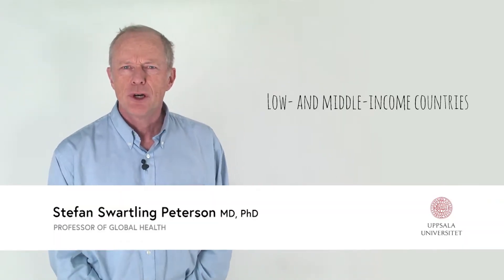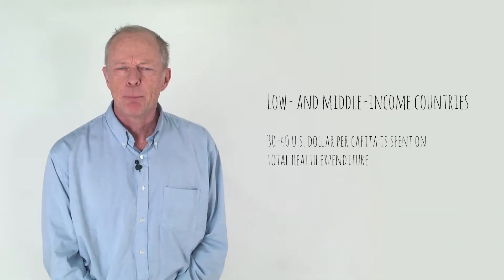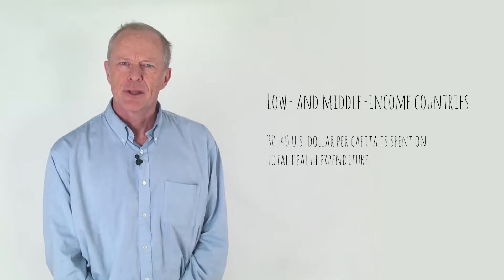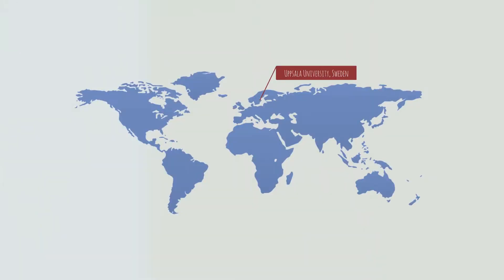Today we're going to talk about antibiotic use in low- and middle-income countries. A low-income country typically spends 30-40 dollars per capita a year on health expenditure, which means considerably less resources than here. Yet many children die from primarily infectious causes that could be cured by antimicrobials and antibiotics.